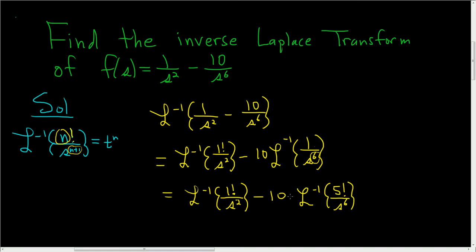So I'll multiply by 1 over 5 factorial. That way they cancel.